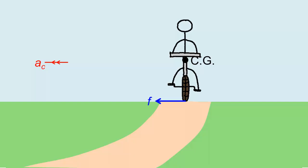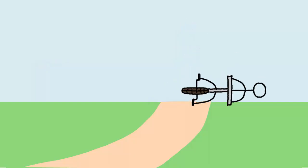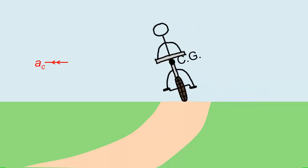This unbalanced moment topples the cyclist outward. Assuming the cyclist doesn't enjoy falling off the bike, he must learn to lean into the turn.